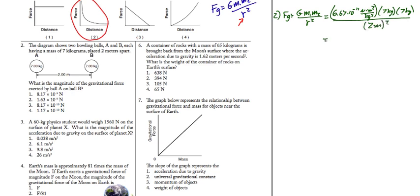So when I put that into my calculator very carefully, I come up with something right around 8.17 times 10 to the minus 10 newtons. That should be answer 3.